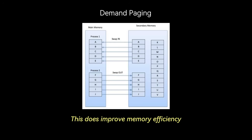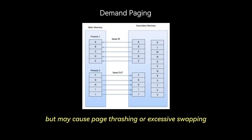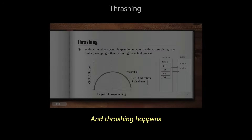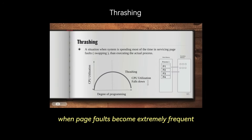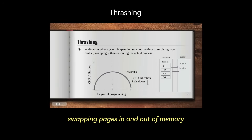This does improve memory efficiency, but may cause page thrashing or excessive swapping. Thrashing happens when page faults become extremely frequent and the system spends most of its time swapping pages in and out of memory instead of running applications.